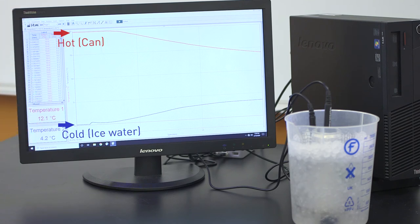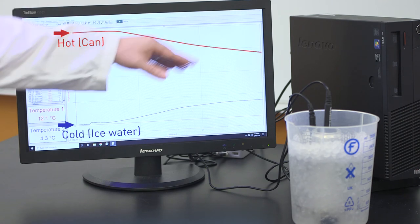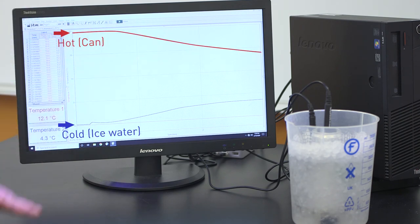So what we should be seeing are two exponential curves. One for the decrease of the temperature of the hot object and one for the increase in temperature of the cold object.